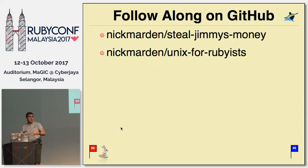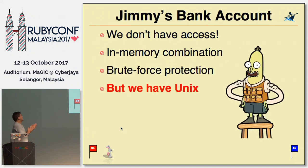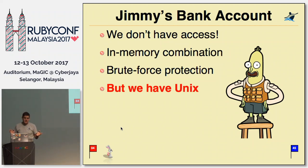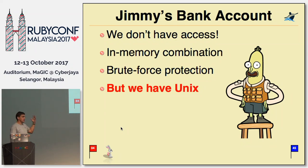If you want to follow along, the actual repo for the code we'll be discussing is Nick Marden, steal Jimmy's money. This talk itself is 'Unix for Rubyists.' So, Jimmy's bank account — we don't have access to it, and it's got an in-memory combination that's combinatorically extremely impossible to guess. There's brute force protection built into his bank. So it's not easy to get the money out. But we have Unix.